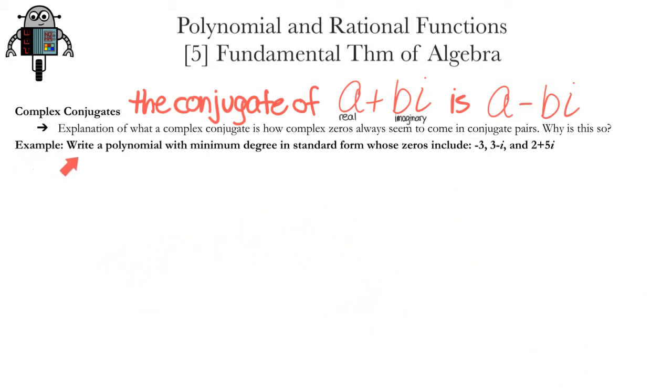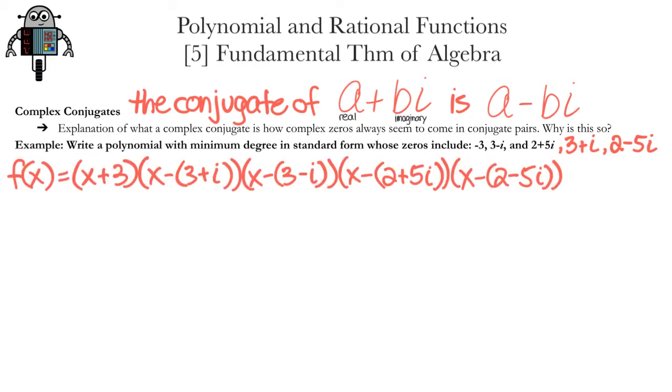Let's try an example. Write a polynomial with minimum degree in standard form whose zeros include negative 3, 3 - i, and 2 + 5i. The first thing we need to do here is make sure we have all of the zeros. Since we have two complex numbers, their conjugates are solutions as well. The other two zeros are 3 + i and 2 - 5i. The next thing we'll do is write the function in factored form with all five of those zeros. Since x equals negative 3, one of the factors is x + 3.